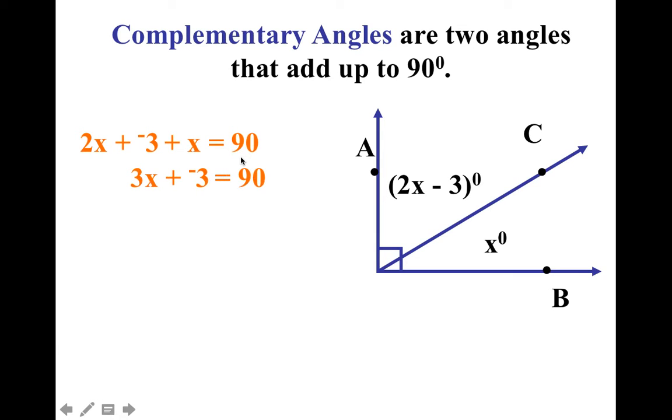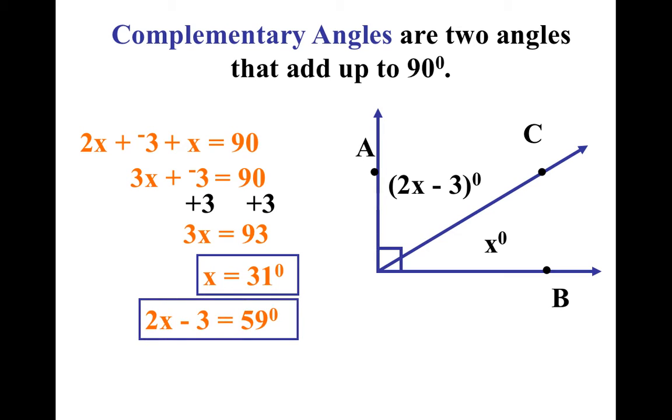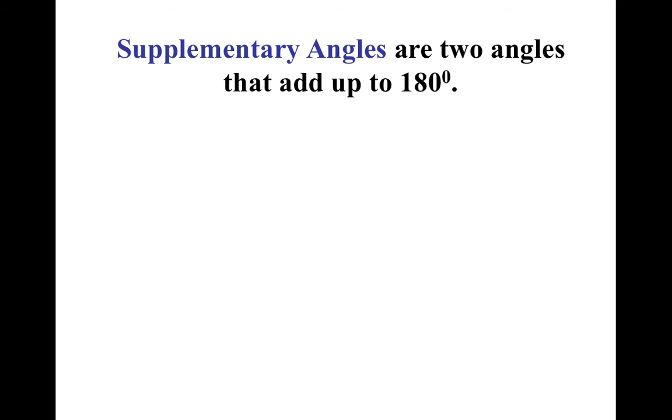So I combine my like terms. I add 3 to both sides. And then I divide both sides by 3. Now x equals 31, which means 2x plus negative 3 equals 59. 31 plus 59 equals 90. Do you guys get to see how we play?